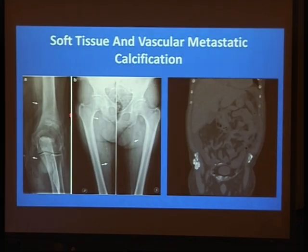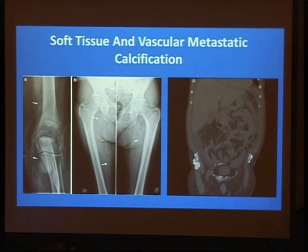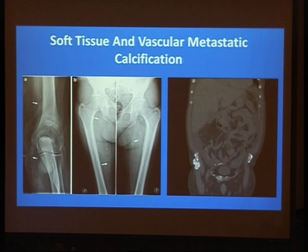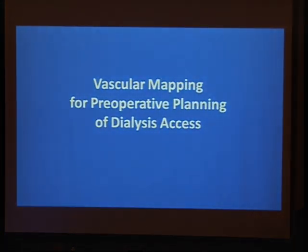Also, vascular calcification decreases the intensity and distensibility of blood vessels, leading to vascular ischemia, and may lead to cardiovascular ischemic changes at the heart. This is from metastatic vascular calcification, seen in blood vessels on plain X-ray. Also, sometimes metastatic soft tissue calcification is seen, as in this non-contrast CT of the abdomen showing vascular calcification at the lateral aspect of the left pelvic wall.